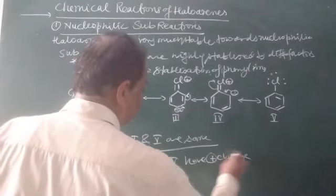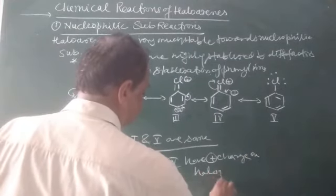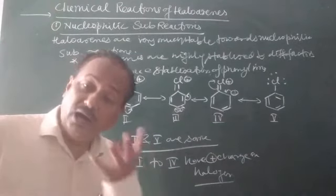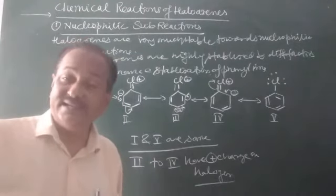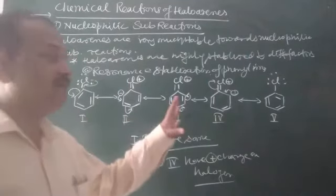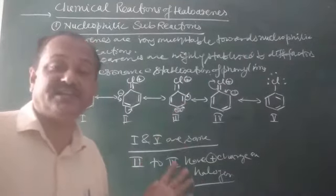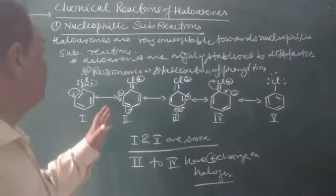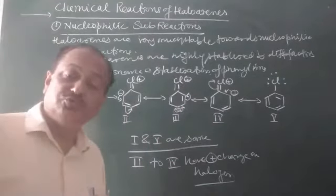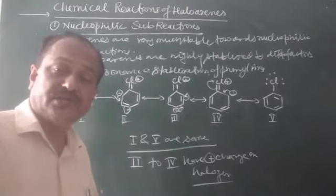In several resonance structures there is positive charge on the halogen atom. So there is no appreciable negative charge present on the halogen. This is the reason that haloarenes do not undergo nucleophilic substitution reactions easily.